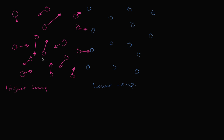These molecules are bumping into each other, transferring their kinetic energy and momentum from one particle to another. When we talk about temperature, we're talking about the average kinetic energy of the system. The blue molecules also have kinetic energy, but on average it's going to be lower. Notice that the magenta arrows are bigger than the blue arrows — though individual blue molecules can have a lot of kinetic energy, the average is lower.